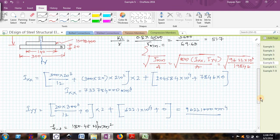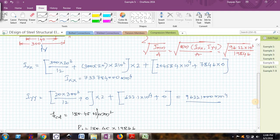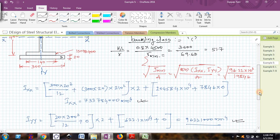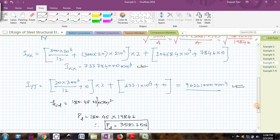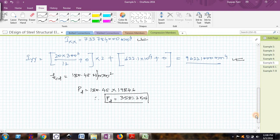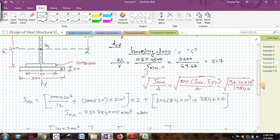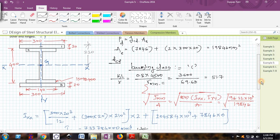This is how we can find the design axial load capacity of a built-up column. Here also, I am stressing more on the fact that you should be very much comfortable in finding I_xx and I_yy, which is the important thing in these kind of problems. Other than this, there is nothing much complicated. All are direct substitutions. I hope you understood. We will see a few more examples in the next videos. Till then, thank you.